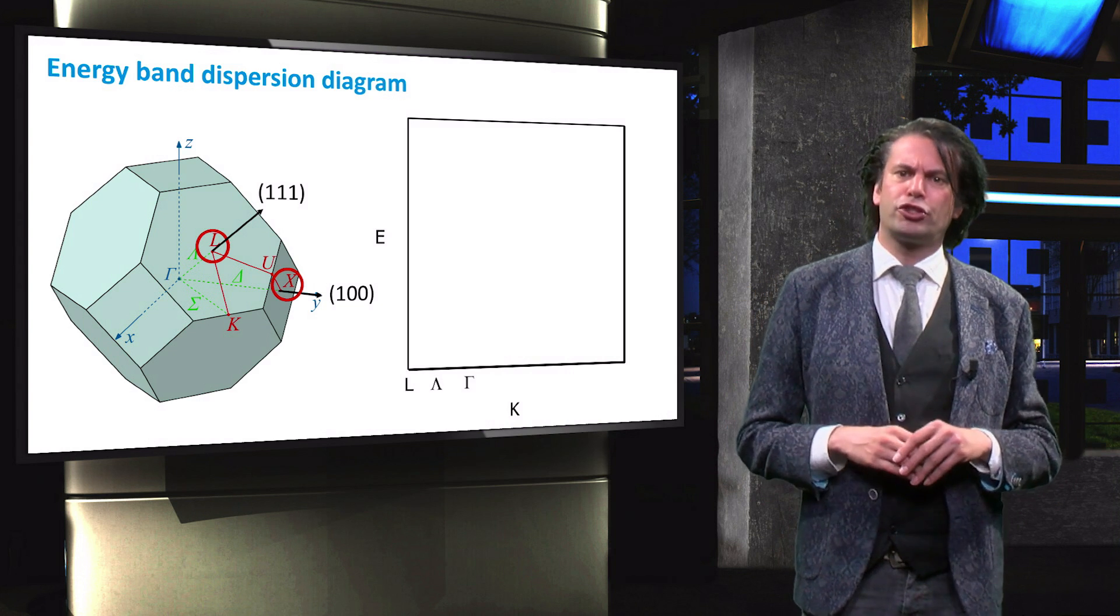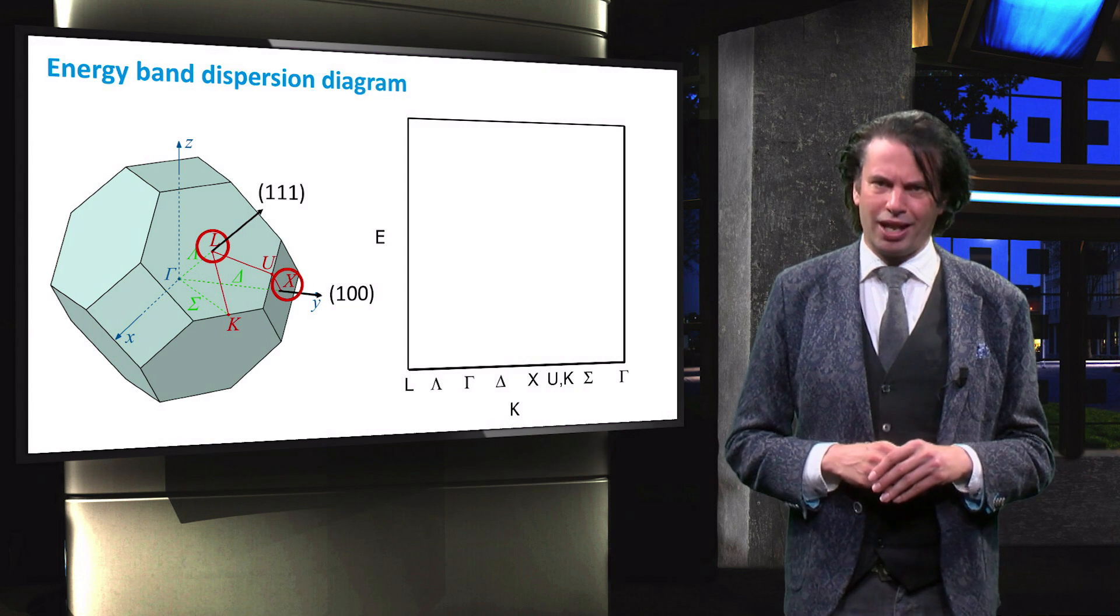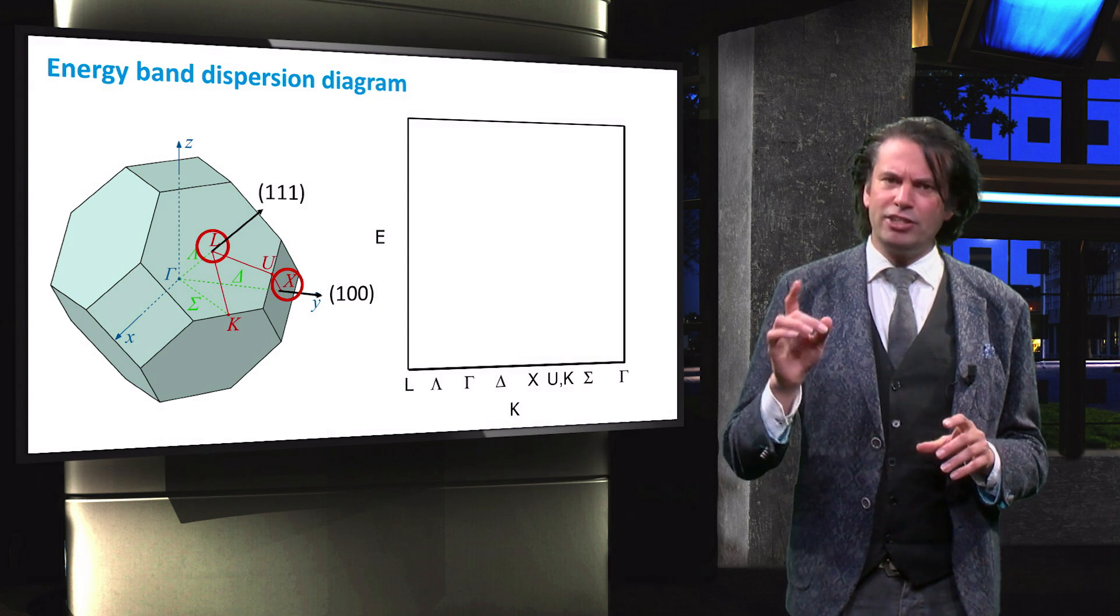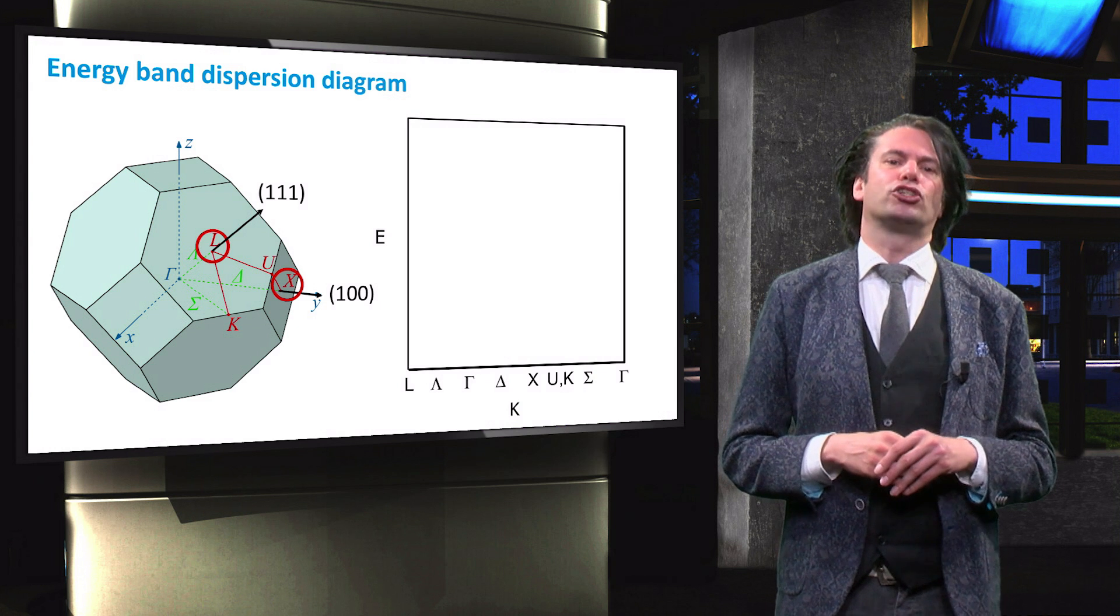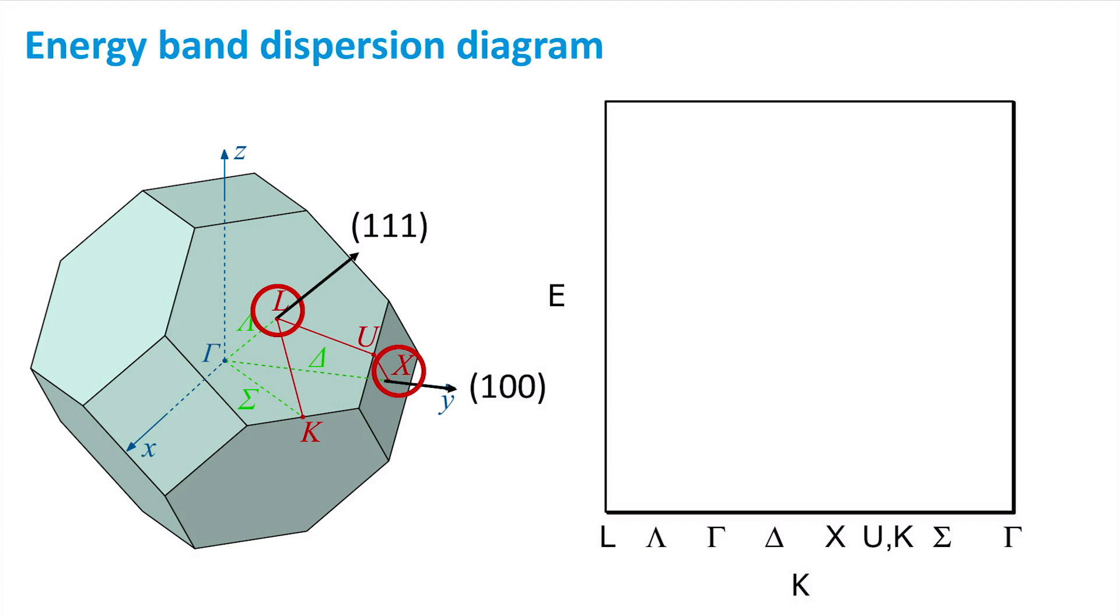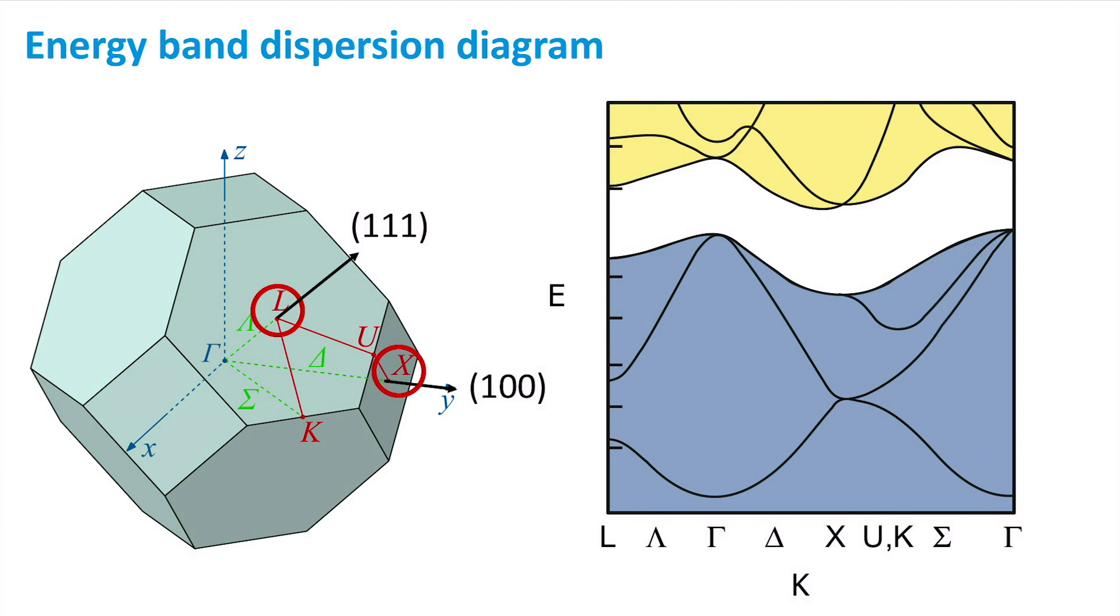By solving the Bloch function for certain positions in the lattice, you can obtain the energy levels of the conduction band and valence band edges. By connecting these energy levels with the specific crystal momentum of the various crystal orientations, you obtain the electronic band dispersion diagram of a material.